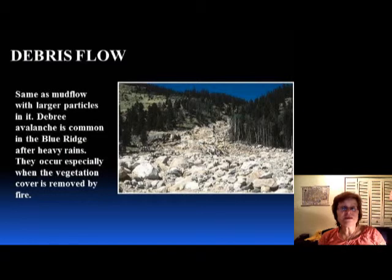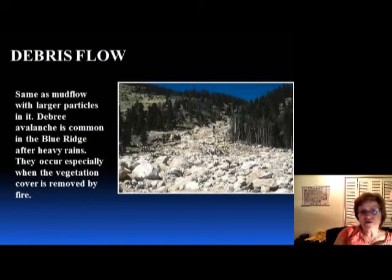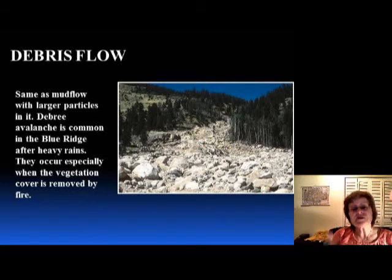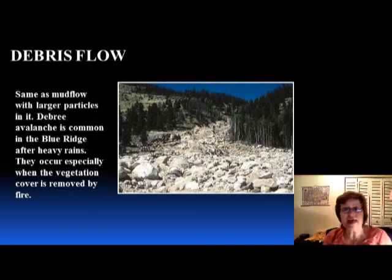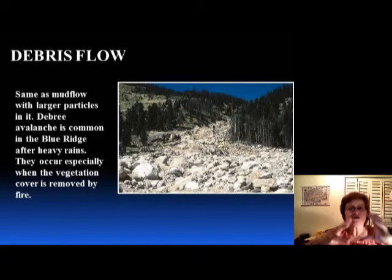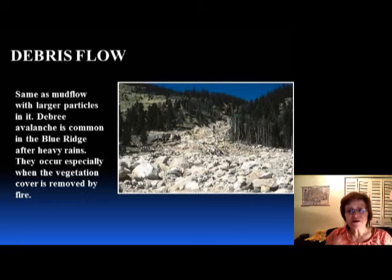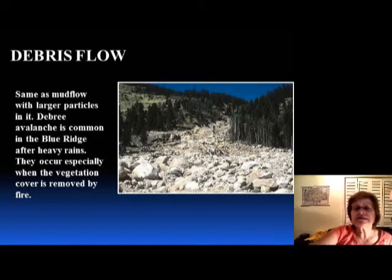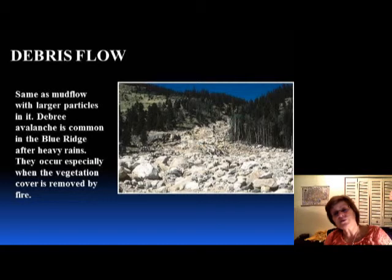The worst kind is debris flow. Debris flow is when you have mud and water plus big rocks. That's the most dangerous because it can actually take houses. This is very common in the Blue Ridge because we have forest fires in the summer, and then when the hurricane season comes in — September, October, November — that's when the debris flow will happen.